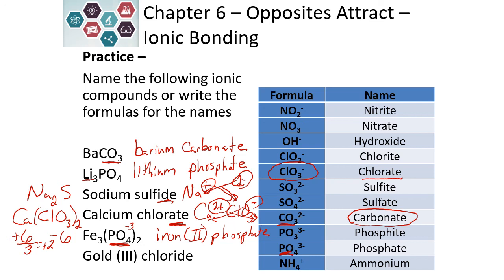Gold(III) — so we're told the charge. Gold is Au. We know it's a plus 3 charge. Chloride ends in -ide, so it's just the element by itself. It falls in column 7, which is a negative 1 charge. So we're going to need 3 chlorides to balance the charge of the gold, giving us AuCl3.